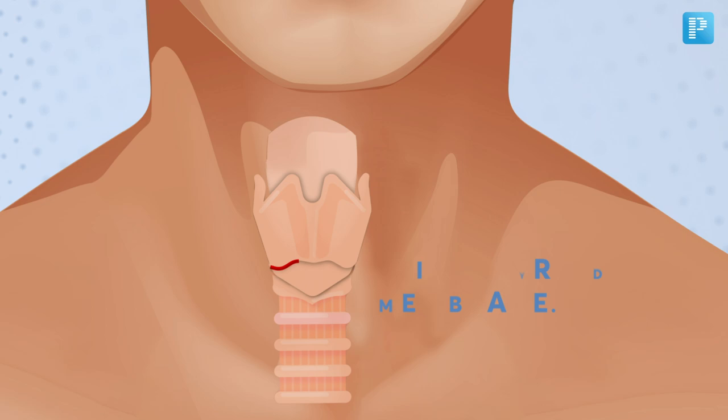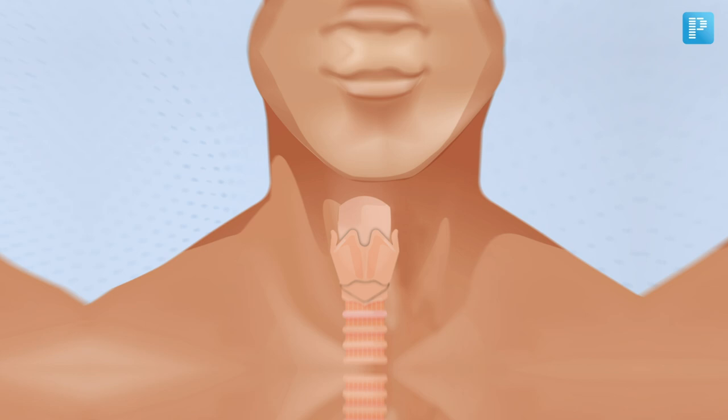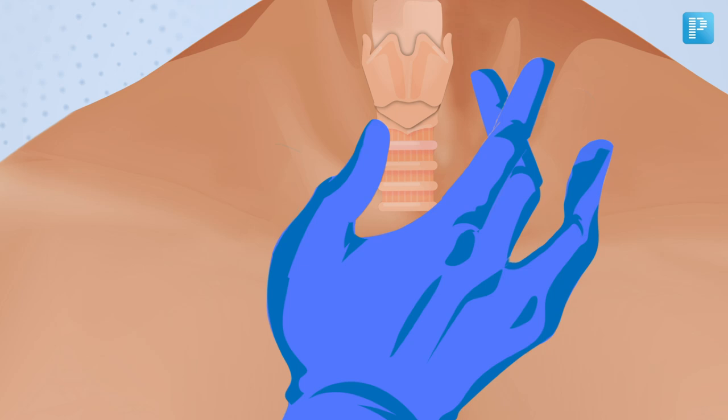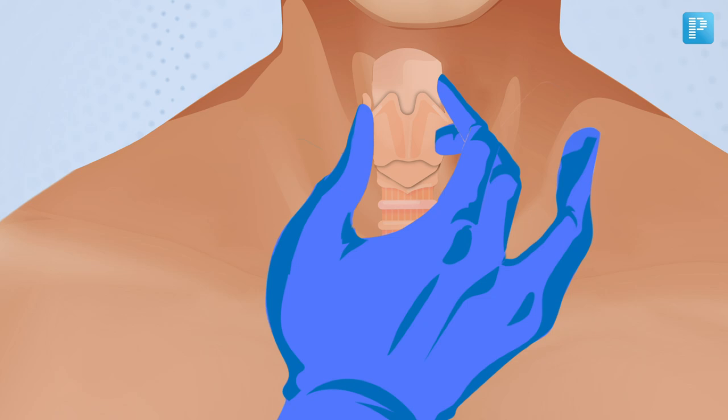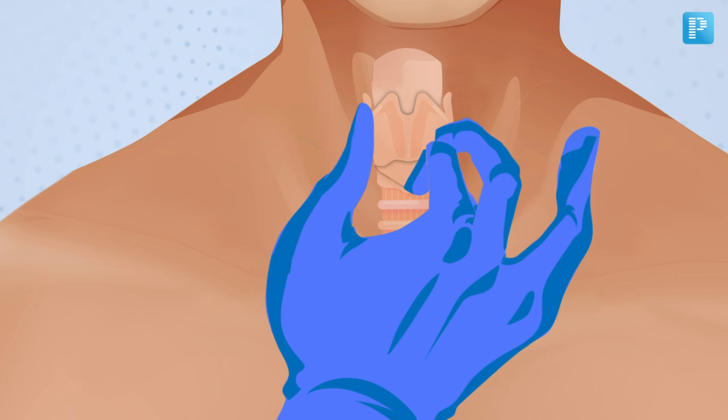At the level of the cricothyroid membrane you will puncture with a needle, but before puncturing you must stabilize the larynx. Use your thumb and middle finger to hold the thyroid cartilage and lift it up, and use the index finger to palpate the midline and the lower border of the thyroid cartilage.